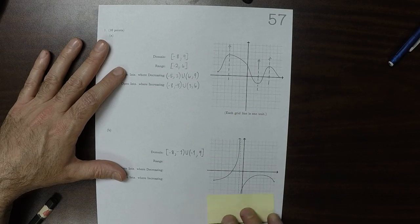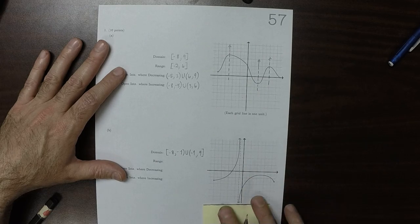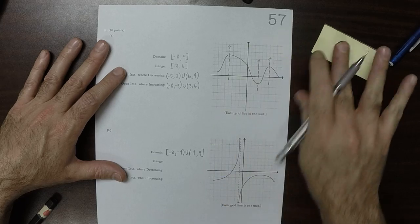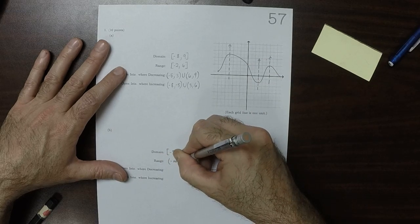The range goes all the way down to negative infinity, because that's what that indicates all the way down, all the way up. So negative infinity to infinity.